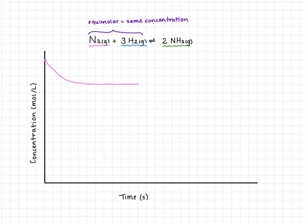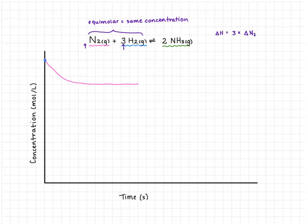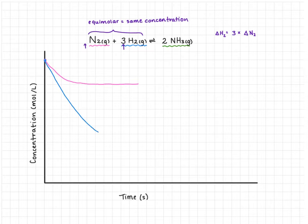Next we look at the change in hydrogen. We start with the same concentration, but we need to examine the coefficients: nitrogen has a coefficient of 1 and hydrogen has a coefficient of 3. That means the concentration of hydrogen is going to change by three times that of nitrogen. So if nitrogen experienced about a three-square drop in concentration, hydrogen should experience a nine-square drop in the same time.